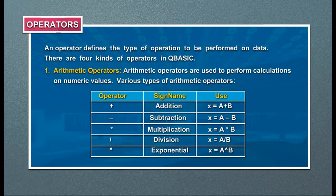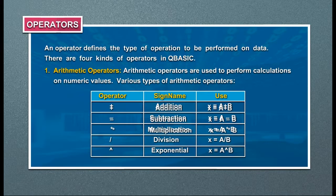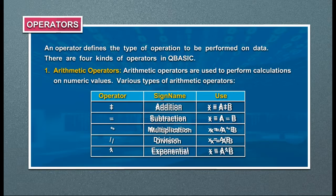Arithmetic operators: plus (+) for addition, e.g., x = a + b; minus (-) for subtraction, e.g., x = a - b; star (*) for multiplication, e.g., x = a * b; slash (/) for division, e.g., x = a / b; and accent (^) for exponential, e.g., x = a ^ b.